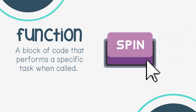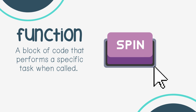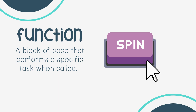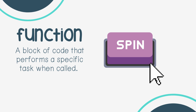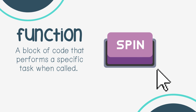Function: a block of code that performs a specific task when called. Instead of writing the same code multiple times, you can create a function and use it whenever you need it. Functions help organize code and make it easier to read and use. For example, in a game you might have a function called 'spin' that makes a character spin — instead of writing all the code for spin every time, you just call it 'spin' when you need it.